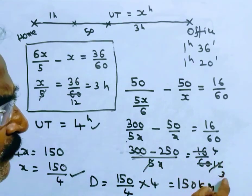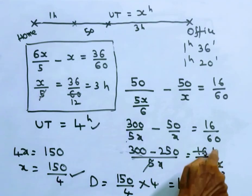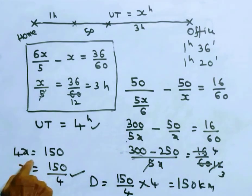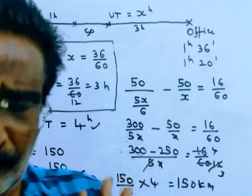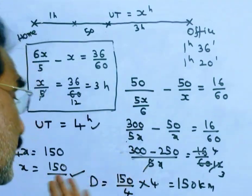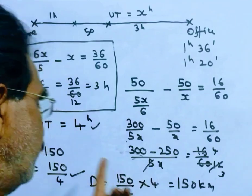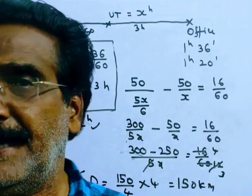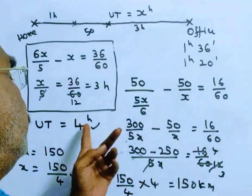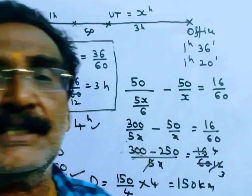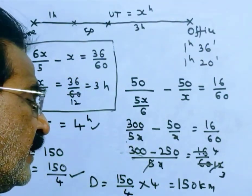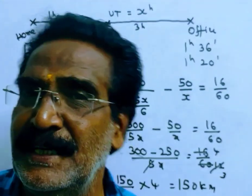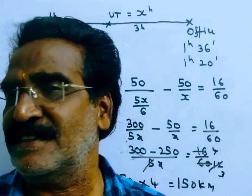Solving the equation: 60/5x − 50/x = 16/60, simplifying gives 4x = 150, so x = 150/4 kmph. His usual speed is 150/4 km/h and the usual time is 4 hours. Therefore, distance equals speed multiplied by time: (150/4) × 4 = 150 kilometers. The distance from home to office is 150 kilometers. Thank you, friends.